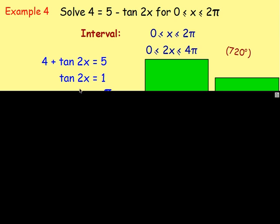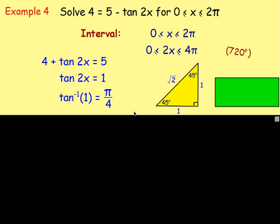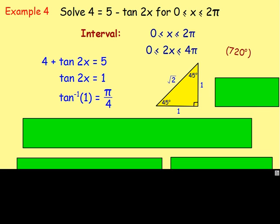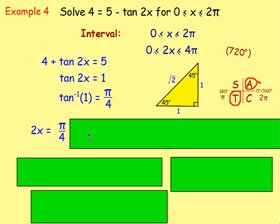Use inverse tan to find the acute angle. Using exact value triangles: inverse tan of 1 — taking 45 degrees, opposite over adjacent is just 1 — so inverse tan of 1 is 45 degrees, which is π over 4. Now use CAST: tan(2x) is positive, so use A and T. The value in A is your acute angle, so 2x equals π over 4, and to get the value in T it's π plus π over 4, which gives 5π over 4.